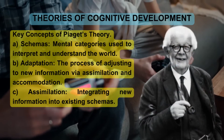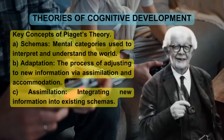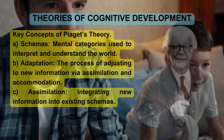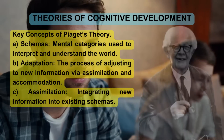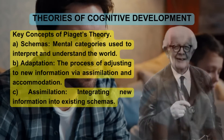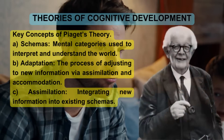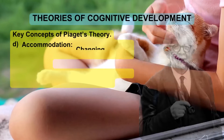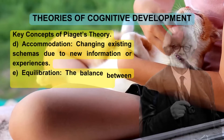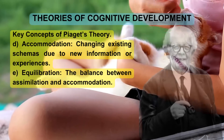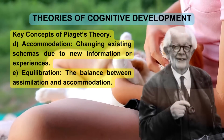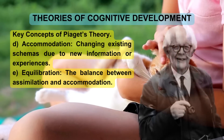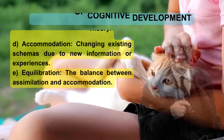Other key concepts include: Adaptation — the process of adjusting to new information via assimilation and accommodation. Assimilation involves integrating new information into existing schemas. Accommodation means changing existing schemas due to new information or experiences. Equilibration is the balance between assimilation and accommodation.